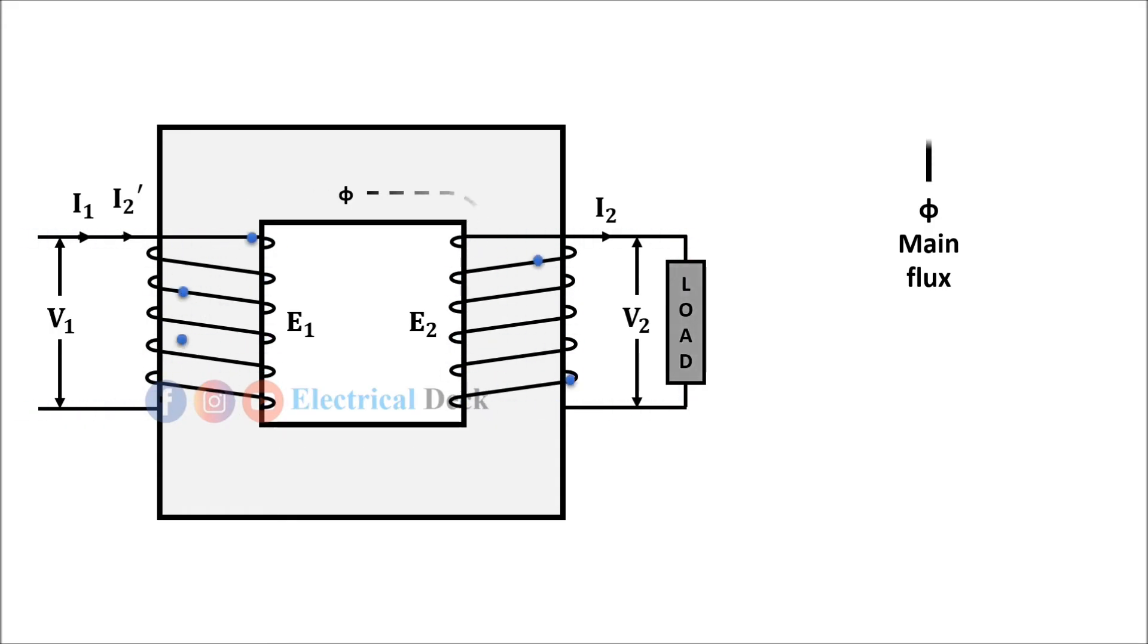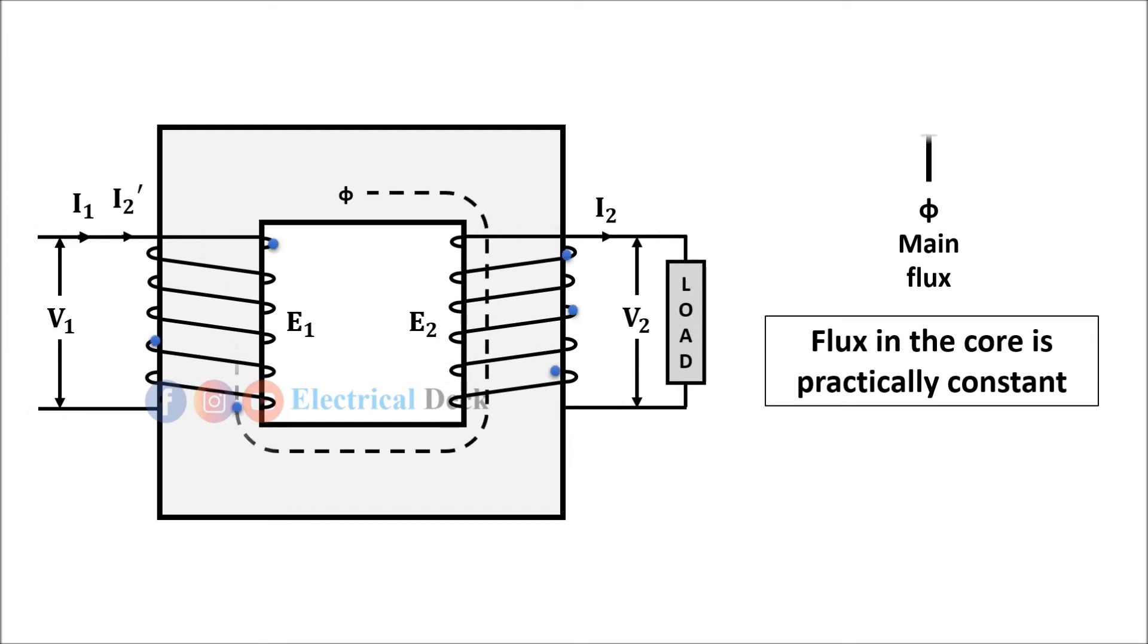The load component current I₂' always neutralizes the changes in the load. As practically flux in core is constant, the core loss is also constant for all the loads. Hence the transformer is called constant flux machine.